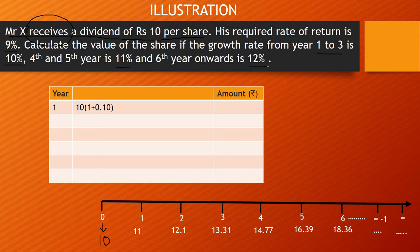Whenever such questions arise, you first have to calculate the dividend you are going to receive at the end of year one, year two, year three, year four, year five, and year six. You have to calculate dividends paid up to the year in which your growth rate becomes constant. In this question, the growth rate becomes constant from the sixth year onwards, so we calculate dividends up to year six. Once you have calculated dividends up to year six, you can value the current price of the share.